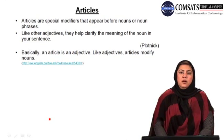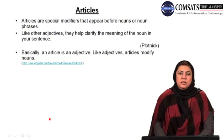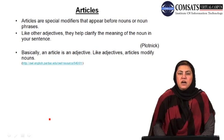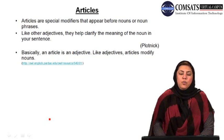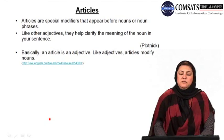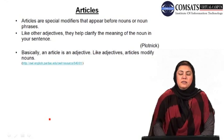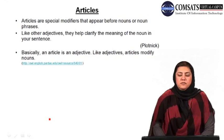Articles are special modifiers that appear before nouns or noun phrases. If you remember, in one of the previous sessions, I talked about adjectives and said adjectives are modifiers or classifiers — they classify or modify the meaning of a noun. So articles are one special type of these modifiers that are used before a noun or a noun phrase to modify it. Like other adjectives, they help clarify the meaning of the noun in your sentence. Basically, an article is an adjective and the function of articles, like any other adjectives, is to modify nouns.